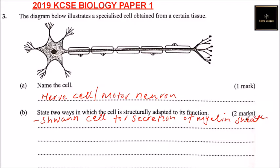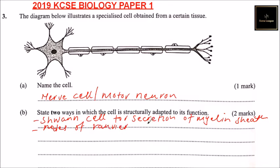The other adaptation is the Nodes of Ranvier, which speed up transmission of impulses.